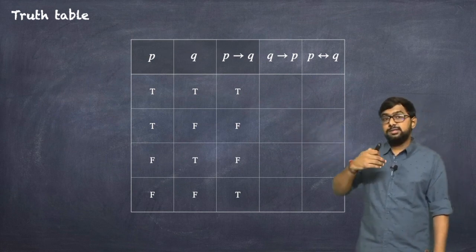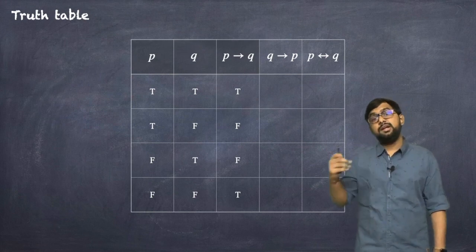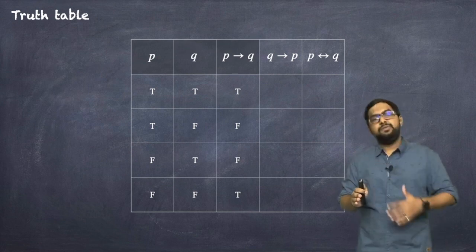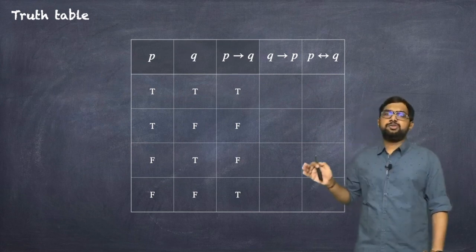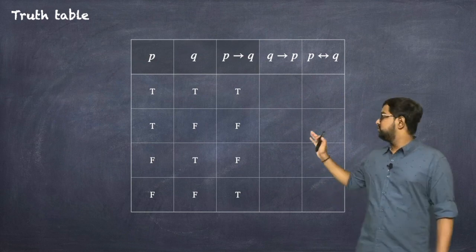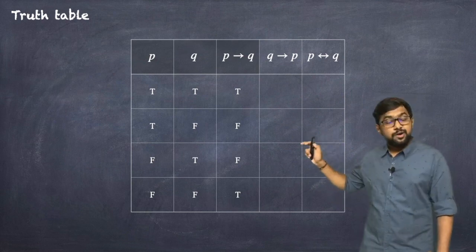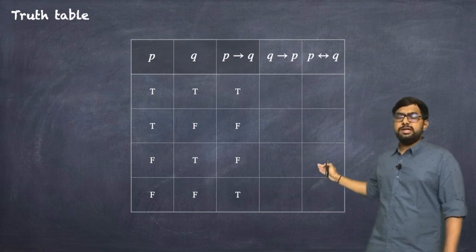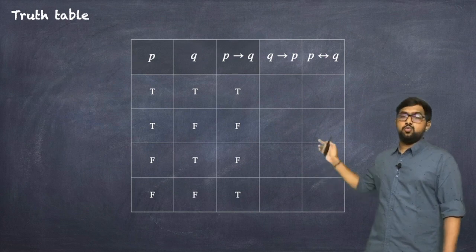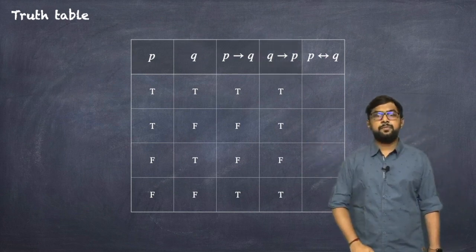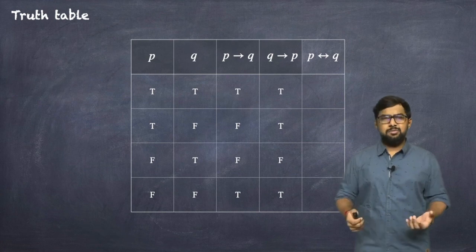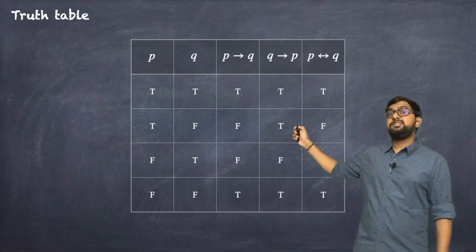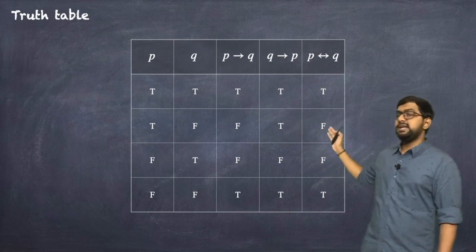When P is F and Q is T, P→Q is T; when both are F, P→Q is T. For Q→P the entries are similarly T, T, F, T. Finally, P↔Q is the conjunction of P→Q and Q→P, giving the column T, F, F, T.